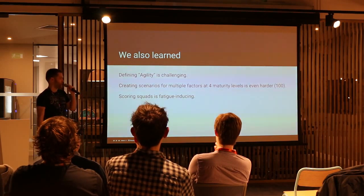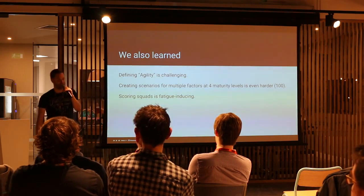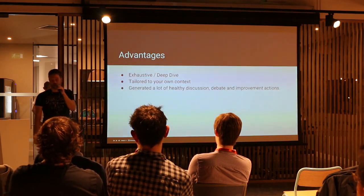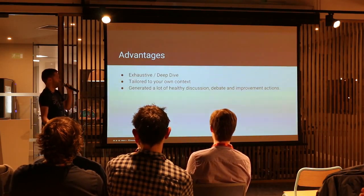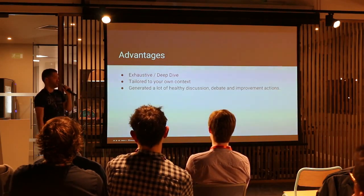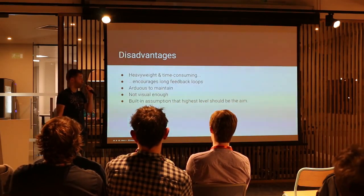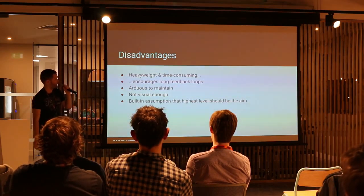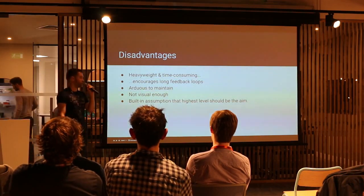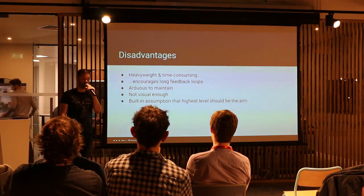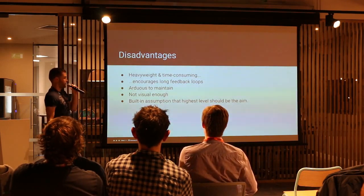As a result, scoring the squads was quite a fatigue-inducing thing. As my colleague Ash will attest to, these kind of sessions can last about an hour and a half sometimes. The advantages of this maturity model: it's exhaustive, it's a deep dive, it's tailored to your own particular context, and it generated a lot of healthy discussion, debate, and improvement actions. The big downside is that it was too heavyweight and time-consuming. As a result, it encourages long feedback loops, so you could see whether or not the interventions you make have actually had any impact. It's also hard to maintain and not particularly visual in its output — it's not the kind of thing you can print out as a big spreadsheet, put on the wall, and have be meaningful to all your stakeholders. And there's also the built-in assumption that, given it's a maturity model with four levels, you should always strive to achieve the highest level in each — which is not actually possible.